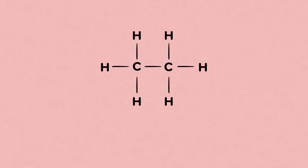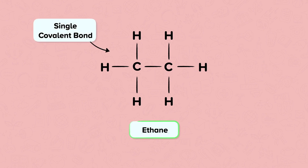Let's look at another example. Ethane is a saturated hydrocarbon. The carbon-carbon bonds in ethane are single covalent bonds, so each carbon atom contains the maximum possible number of hydrogen atoms per carbon atom.